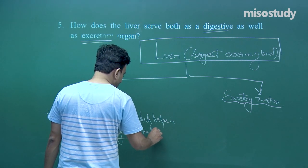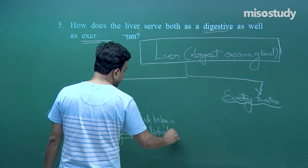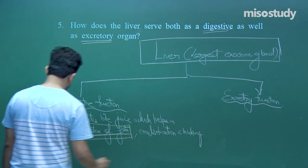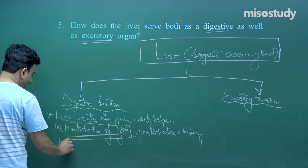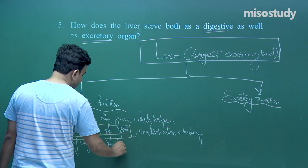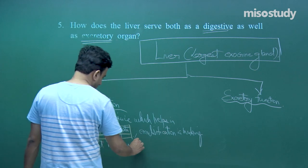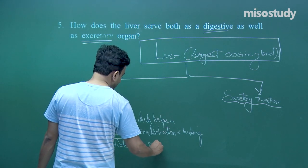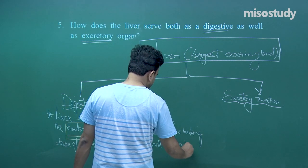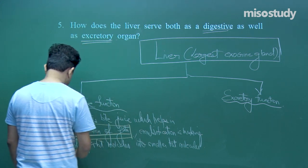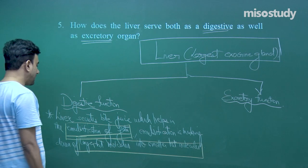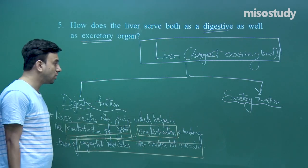Emulsification is the breaking down of larger fat molecules into smaller fat molecules.